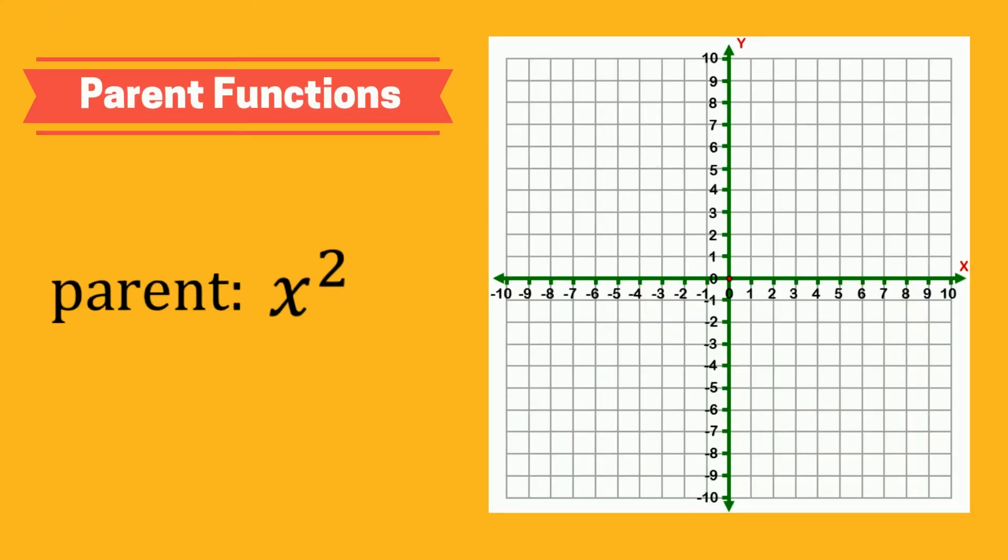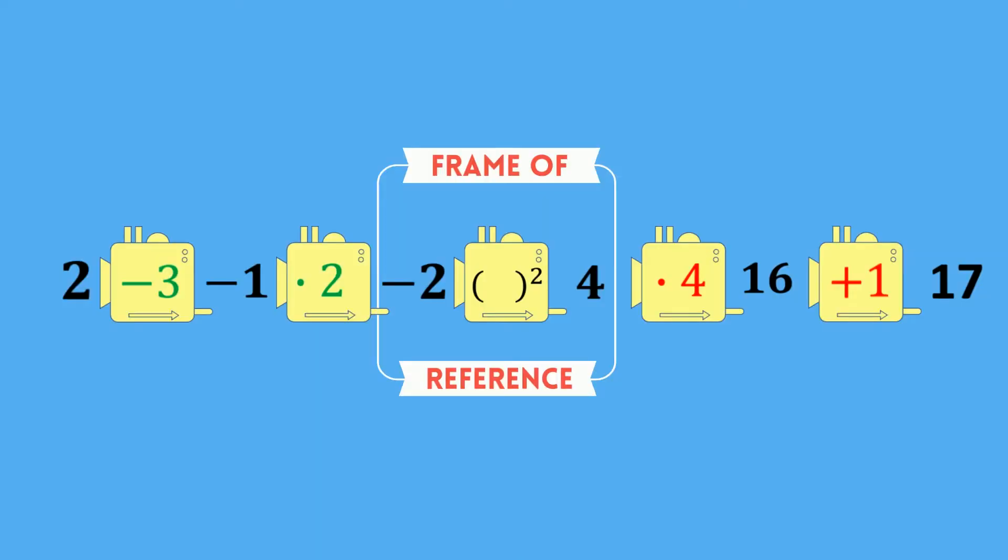In this process, the parent function is usually a great place to put our frame of reference. It usually has a distinctive shape or equation. But, this process reveals that our frame of reference is somewhat arbitrary. If we want, we can choose a different frame of reference.